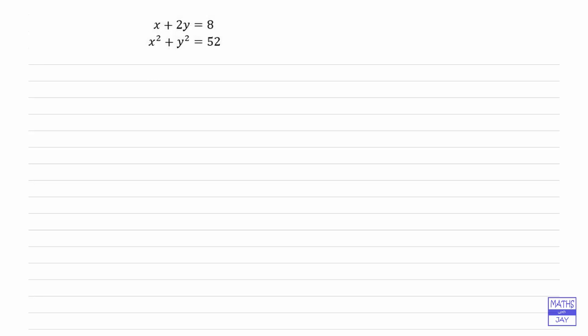Let's number the equations to start with. The first one, number it 1, and the second one 2. Then we're going to use the first equation to make x the subject. So equation 1 is giving us that x is equal to 8 minus 2y.